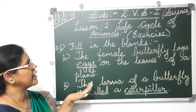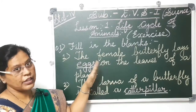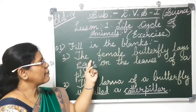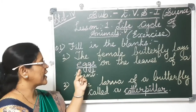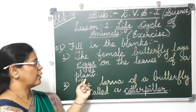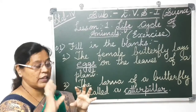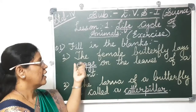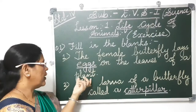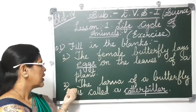The first question here is fill in the blanks — this is your textual exercise. The first one is: the female butterfly lays eggs on the leaves of a plant. The female butterfly lays eggs on the leaves of a plant. So the first fill in the blank answer is eggs.